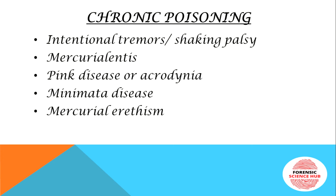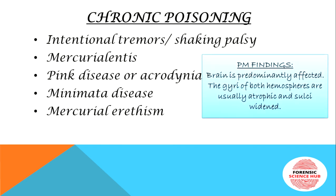Mercurial erythrism is seen in the chronic phase of inorganic mercury poisoning — a series of symptoms described by Kussmaul, seen in mirror factory workers. Post-mortem findings in chronic poisoning include effects on the brain — the gyri of both hemispheres are usually atrophic and the sulci are widened.